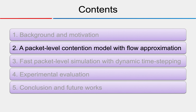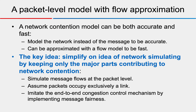We now introduce the packet-level contention model. We believe a network contention model can be both accurate and fast: if you model the network at the packet level rather than the message level you can be accurate, and if the model can be approximated with a flow model it can be fast. The key idea is to simplify a detailed simulation by retaining only the major parts that contribute to network contention: we simulate message flows at the packet level, assume a packet exclusively occupies a link, and imitate end-to-end congestion control by implementing message flow buffering.